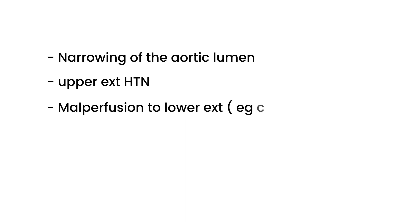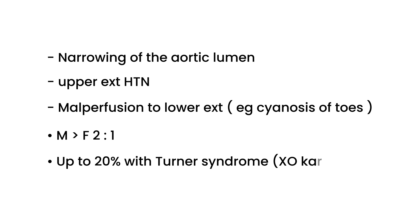Let's go back into some of the basics in terms of defining this. It's a narrowing of the aortic lumen as I had previously drawn, and it results in upper extremity hypertension. Unfortunately, it will result in malperfusion, lack of blood flow to lower extremity. It's a little bit more common in men versus women, two to one. What's really important to mention - a lot of clinical vignettes talk about this - up to 20% of patients with Turner syndrome will have coarctation of the aorta. And the characteristic karyotype is XO.